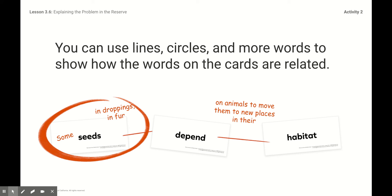I have made a connection with these three words. And this is what I'm hoping that you will do later on when you're writing your scientific explanation. That you are thinking about seeds and how they depend on animals and to live and to grow in different places in the habitat. That's why I wrote it. Some seeds in droppings and in fur of the animals depend on animals to move them to new places in their habitat. Because that's the only way that seeds can really move around and grow in different places. They need the animals to help them with that.